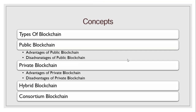In this video we will understand about different types of blockchain. First we will understand about public blockchain, then we will look at its advantages and disadvantages. Then we will move to private blockchain, followed by hybrid blockchain, and for the fourth type we will cover consortium blockchain.